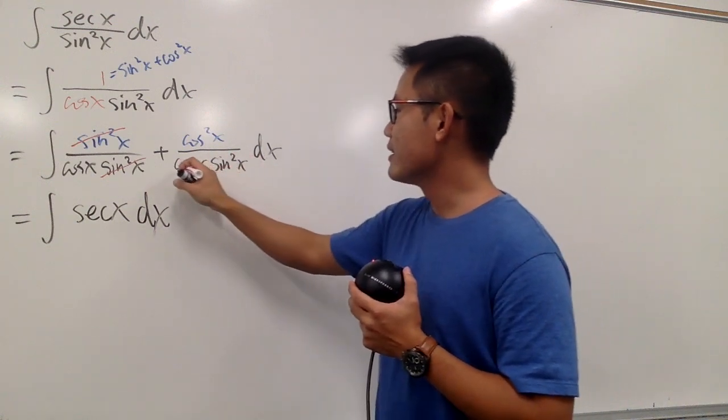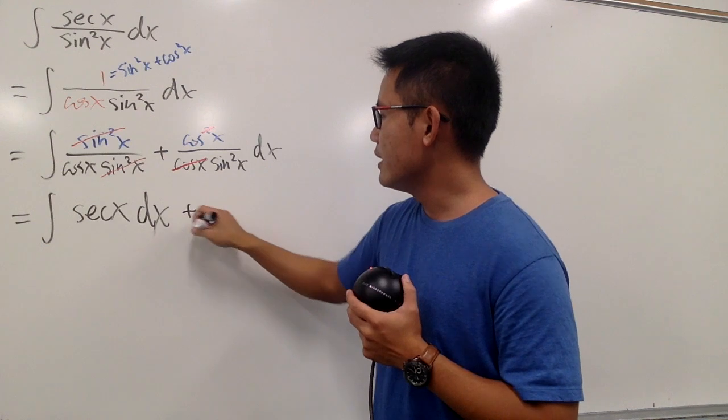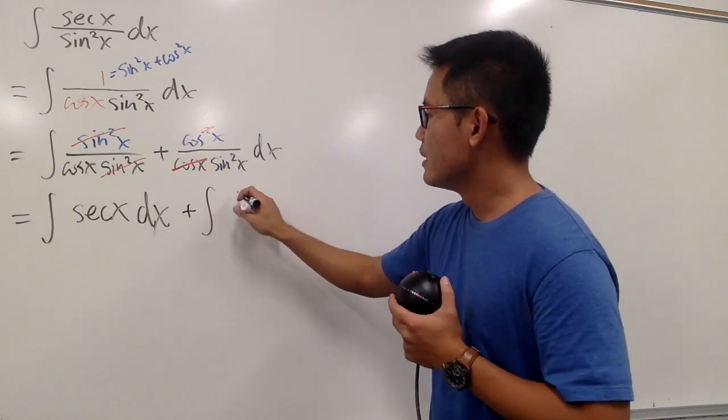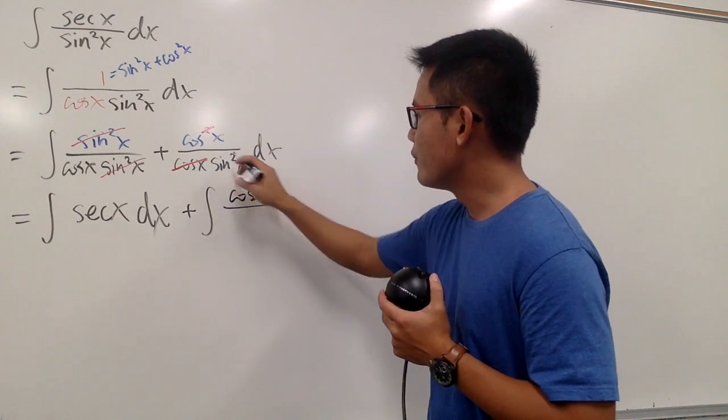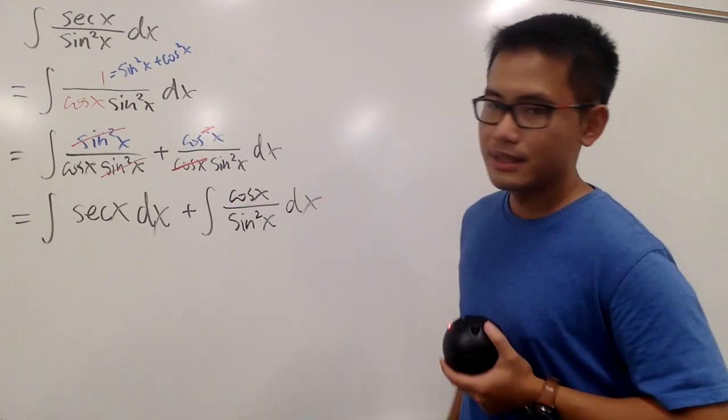And then this right here, I can cancel this cosine and one of them. So, in another word, I will have the integral, right? This is my second one. And I have the cosine x on the top over sine squared x on the bottom, like this.